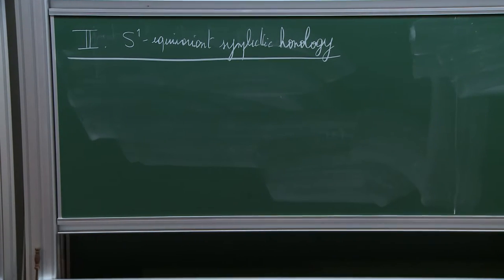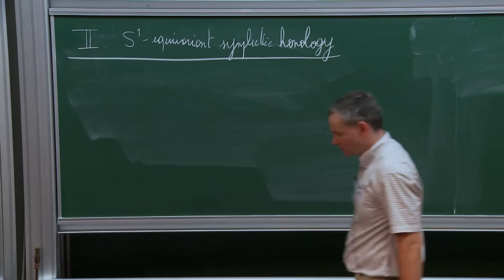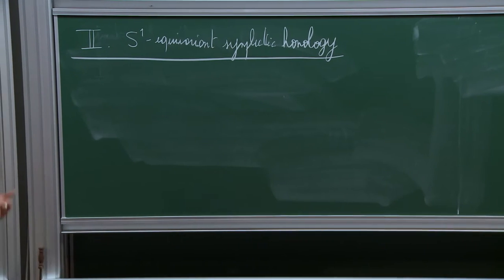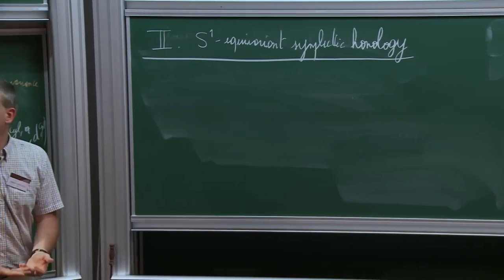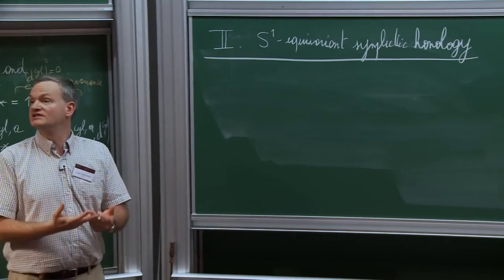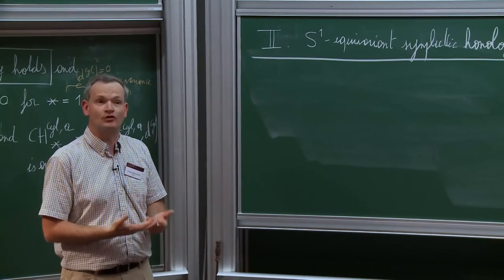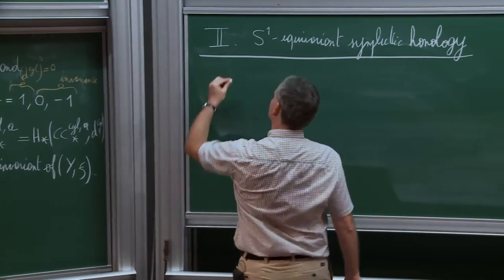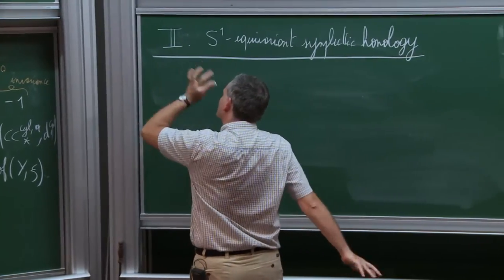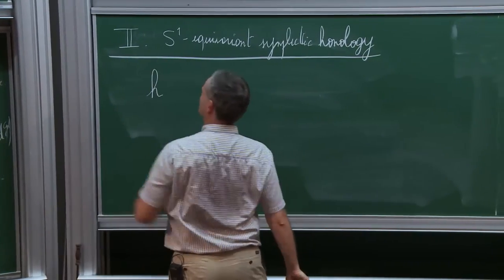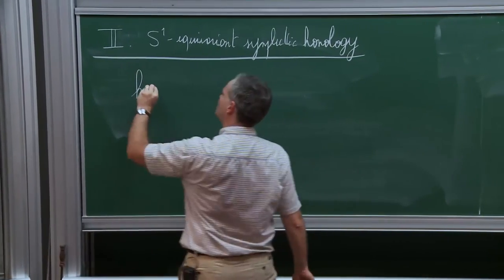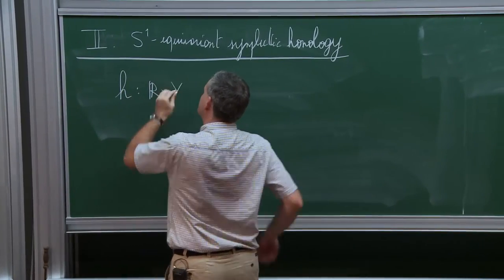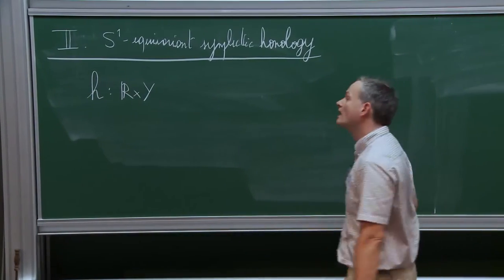The big difference between contact homology and symplectic homology is that now we are really in Floer theory. For Floer theory, you need an extra ingredient which is a Hamiltonian function. Let's consider first an easy model of a Hamiltonian function h, defined on our symplectic manifold—namely the symplectization of Y.